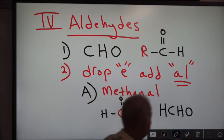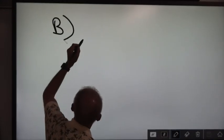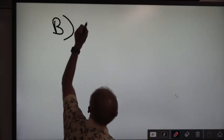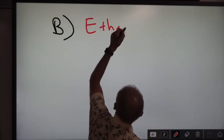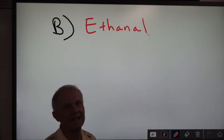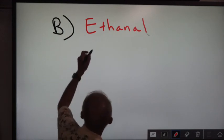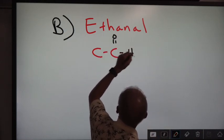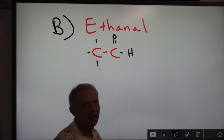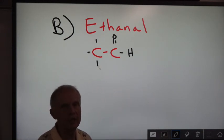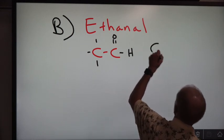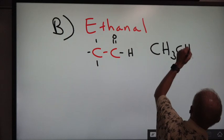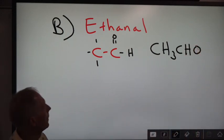Capital letter B is ethanal. Eth means two carbons. You have the double-bonded O, then H, H, H, H to fill the bonds. The molecular formula is CH₃CHO — that is ethanal.